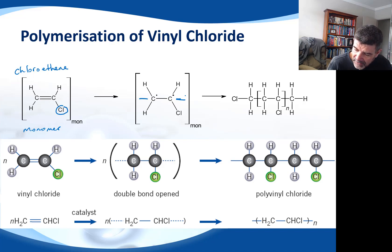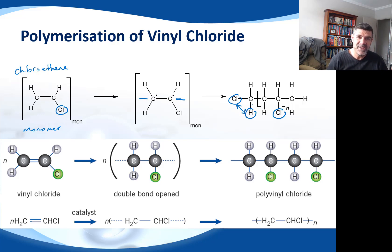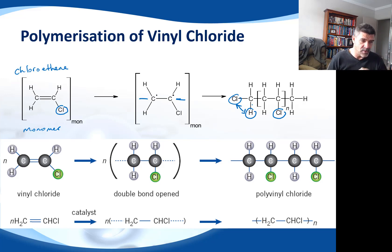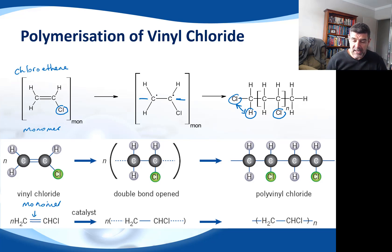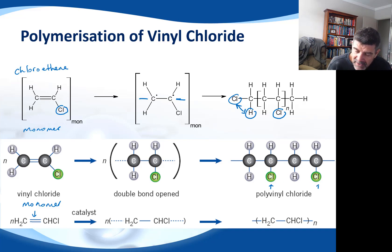When this polymerizes, we have bonds forming between each of the different monomers, and as you build up the molecule you can see alternating chlorines — every second carbon has a chlorine on it in the same position. Here's our vinyl chloride monomer, and here's how we represent it, with the opening of the double bond in the same way as for polyethylene, producing these long chain polymers.